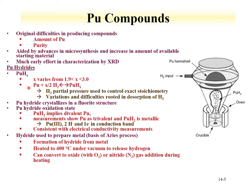A simple compound already discussed is the hydride. Plutonium hydride can be formed by the reaction of plutonium with hydrogen to get PuHx, where x varies from 1.9 to 3. The hydrogen partial pressure can be controlled to develop the exact stoichiometry. The plutonium hydride has a fluorite structure, and if we have PuH2, this would imply plutonium is divalent; however, measurements show the plutonium is trivalent and PuH2 is metallic.